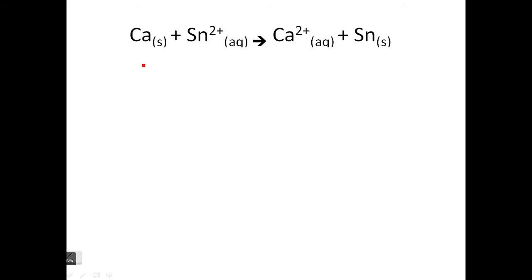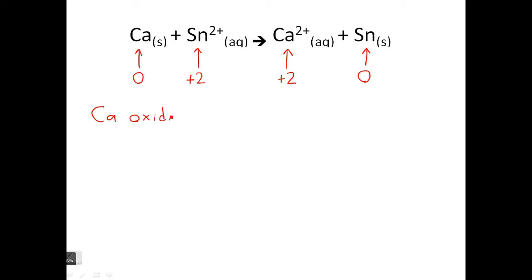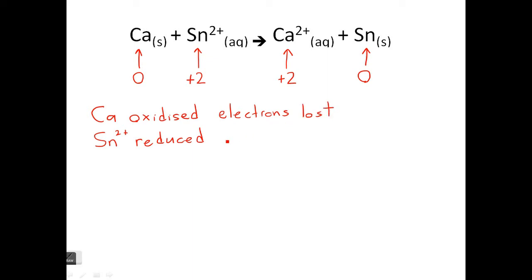Let's recap the oxidation states. The calcium is zero because it's an element. The Sn²⁺ — the charge on the ion is 2 plus, so the oxidation state is plus 2. That's the same for calcium. The Sn is a solid element, so that's zero. The calcium's oxidation state has changed from zero to plus 2, so the calcium has been oxidized. The Sn²⁺ oxidation state has gone from plus 2 to zero — it's decreased, so it's been reduced.